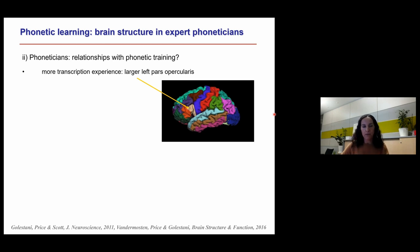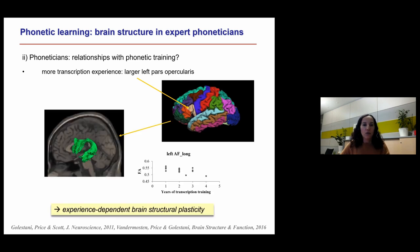We were also interested in whether within the phoneticians group there were correlations between aspects of brain anatomy and the amount of transcription training experience — correlations that might indirectly indicate structural plasticity. We found that phoneticians who had had more years of transcription training experience had larger gray matter volumes in this sub-region of Broca's area compared to those with less experience. We did not find corresponding correlations between experience and auditory cortex anatomy.